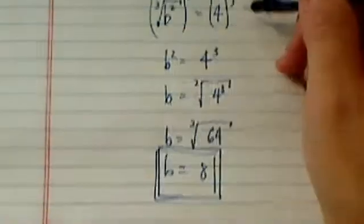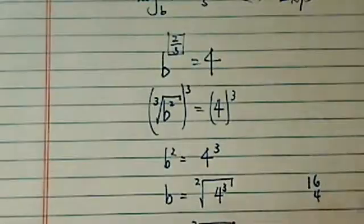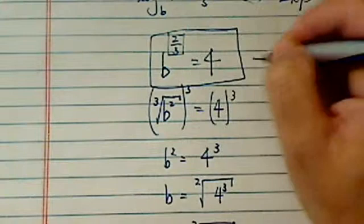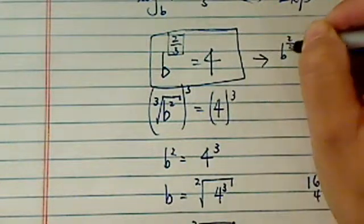Now, over here, if you don't see or don't remember, and get stuck over here, what you can do is this. b to the 2/3 equal to 4.